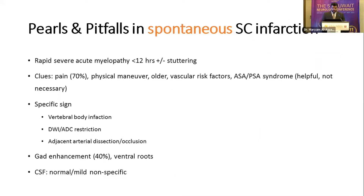Spontaneous spinal cord infarction usually reaches maximum deficit within 12 hours with a potentially stuttering course and typically severe myelopathy. Clues include pain in 70% of patients, a history of physical maneuver, and occurrence in elderly patients with vascular risk factors — though young people can also be affected. Gadolinium enhancement is common in about 40% of cases; enhancement can also involve nerve roots and vertebral bodies due to shared blood supply. CSF can be normal or nonspecific.